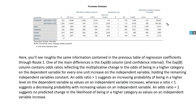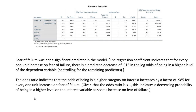In the parameter estimates table, we have a column of odds ratios — that's the main difference between the two routes. The odds ratios reflect the multiplicative change in the odds of being in a higher category on the dependent variable for every one unit increase on the independent variable. An odds ratio greater than one suggests an increasing probability of being in a higher level as values on an independent variable increase, whereas a ratio less than one suggests a decreasing probability. An odds ratio equal to one suggests no predicted change in likelihood. I'll leave it to you to go through the PowerPoint for details on each of these odds ratios.